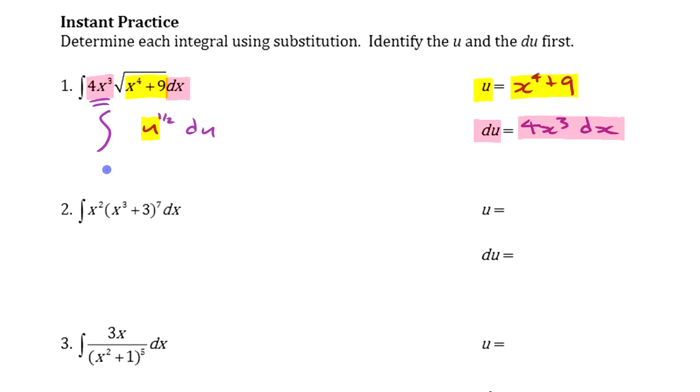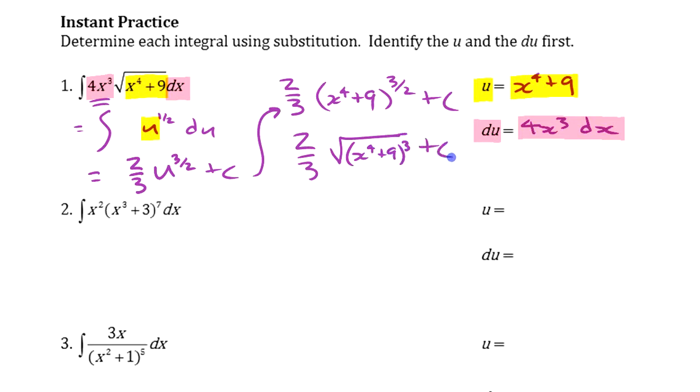And then when we write this, all we're going to say that this is equal to is it's going to be u to the 3 halves. And then we're going to divide by 3 halves. So that's 2 3rds there, plus a constant. So when we go back to writing this out here, we've got 2 3rds u to the 3 halves, it's that function to the 3 halves, x to the 4th plus 9. If you want to write it as we did to start with, you could make it 2 3rds square root of x to the 4th plus 9 to the 3rd, just to use root signs like the original thing had. And that's it.